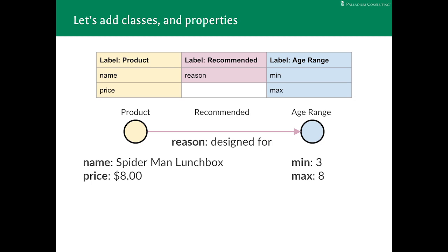Graph databases let us define classes of vertices just like databases let us define tables. In graph databases, those classes are called labels. Any vertex with the product label will also have a name and a price. Any age range will have a minimum and maximum age. And any recommendation may come with a reason why it was recommended. Most graph databases even let you define cardinality rules for the edges. That is, you can say whether a relationship is one-to-one or one-to-many, many-to-many, and so on.